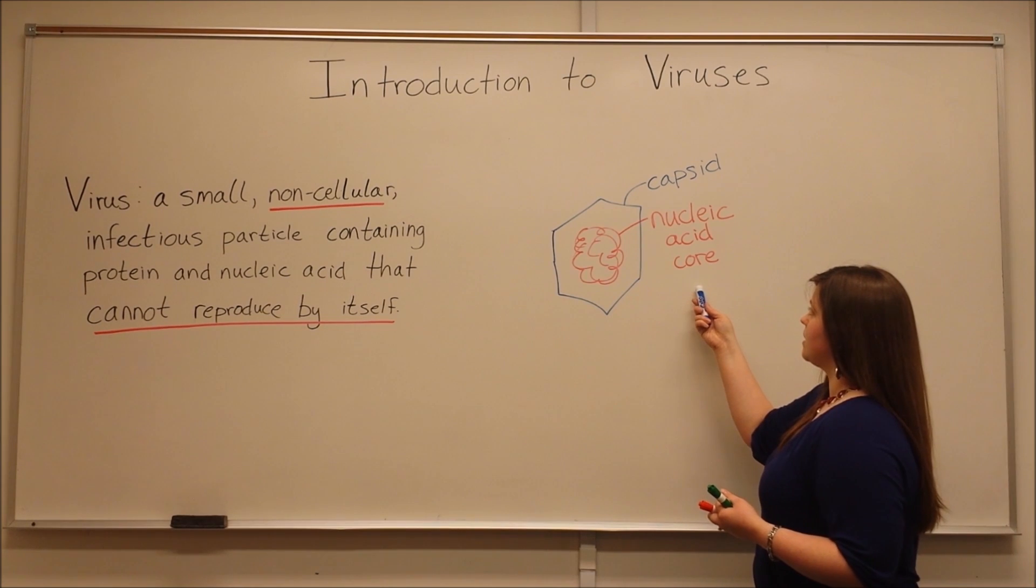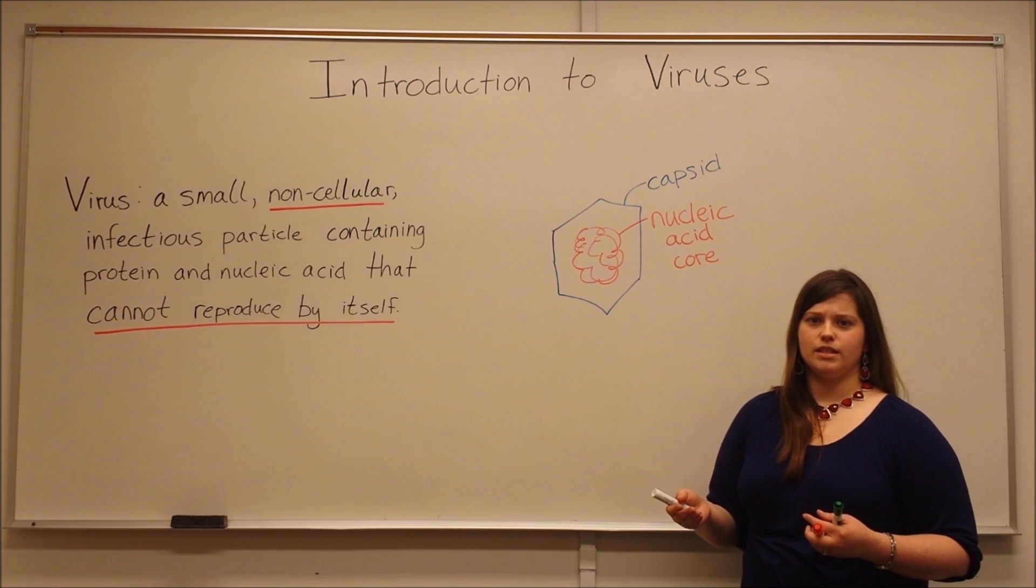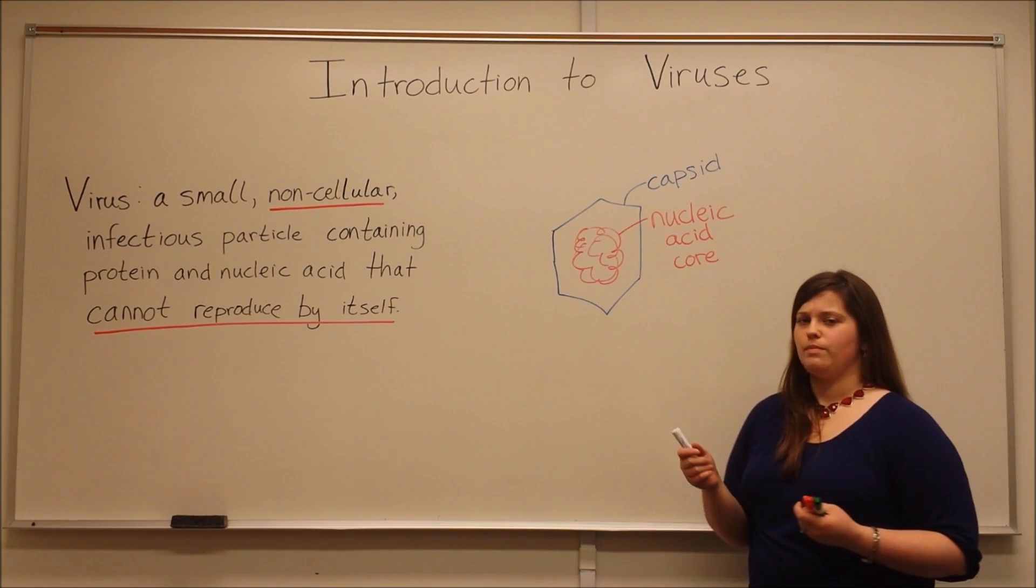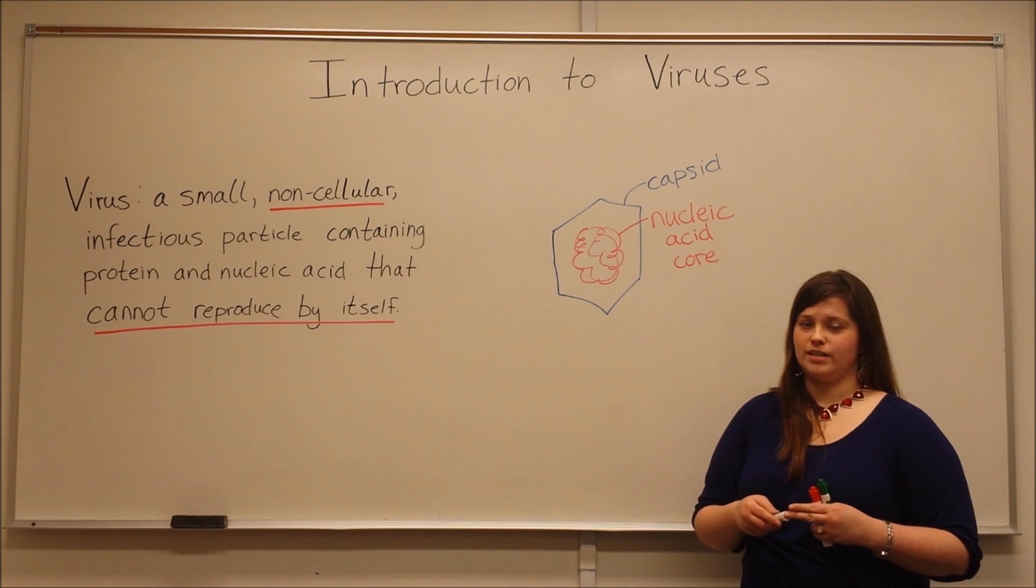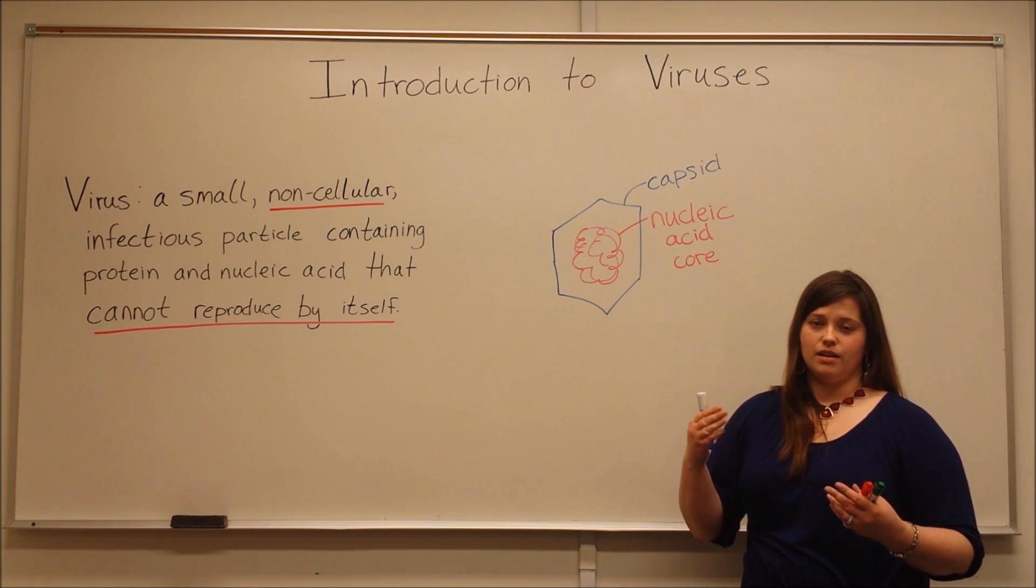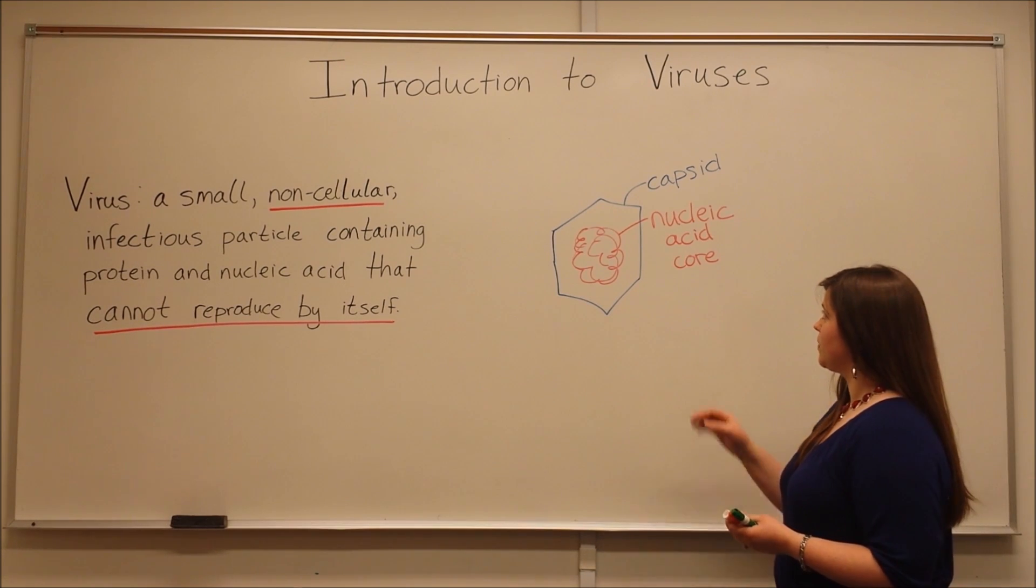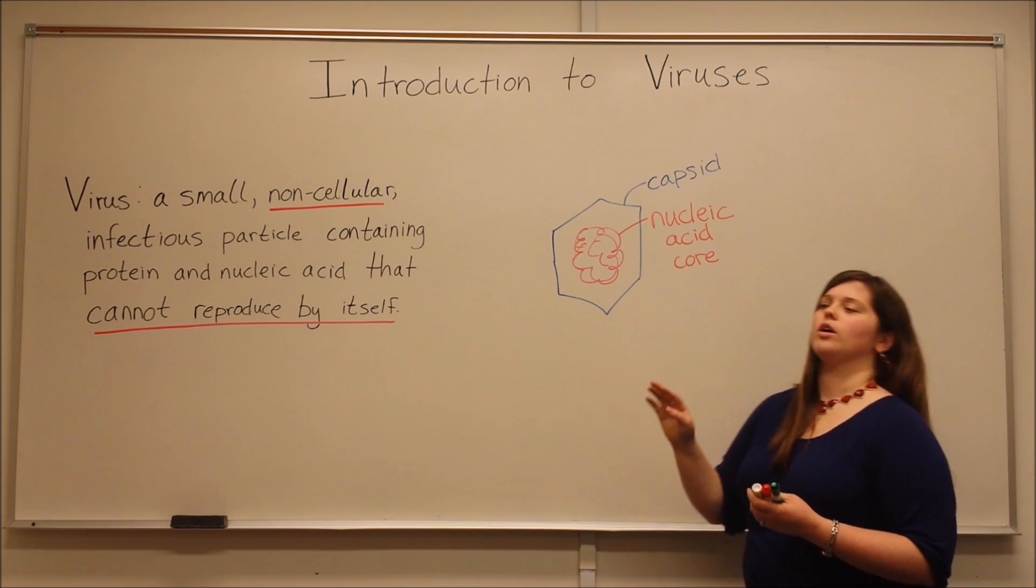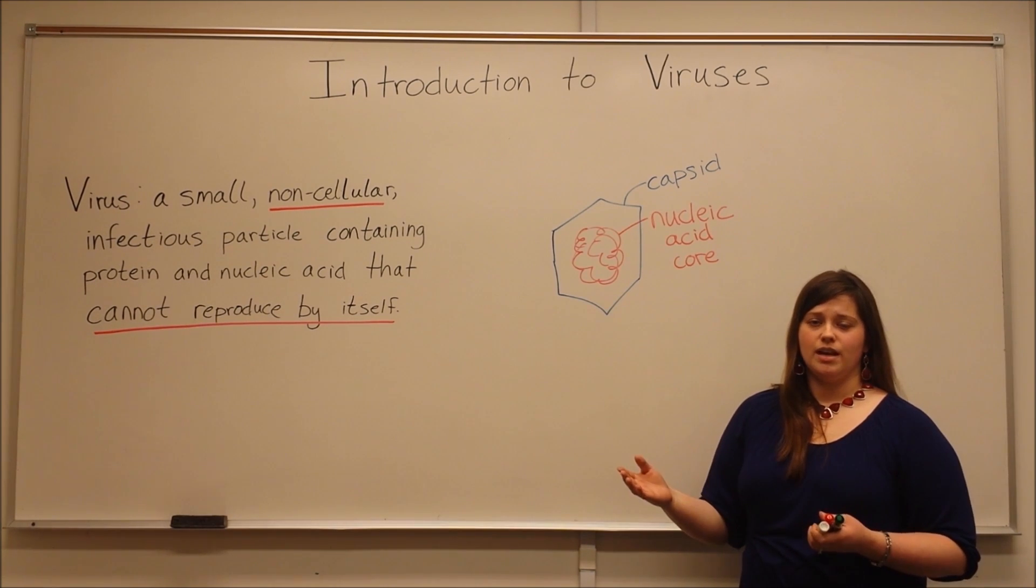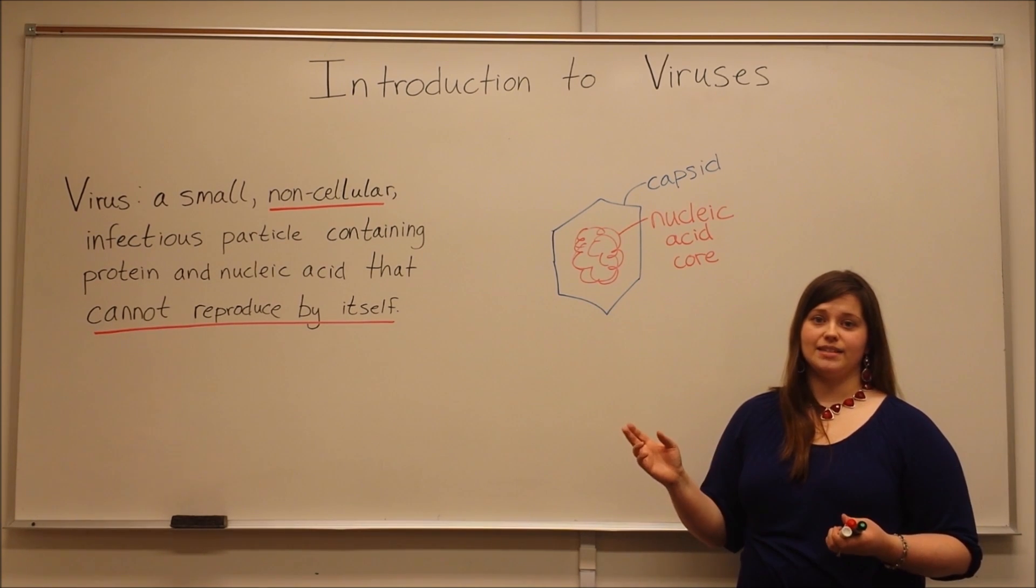The nucleic acid core is where we find a lot of the diversity between different types of viruses. The nucleic acid core can be made up of double-stranded DNA, double-stranded RNA, single-stranded DNA, or single-stranded RNA. And there are different replication mechanisms for these different types of viruses. Also, that nucleic acid core can be circular or it can be linear. It can even be segmented, which means more than one linear piece of nucleic acid.